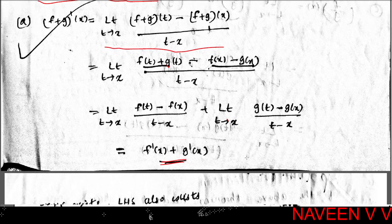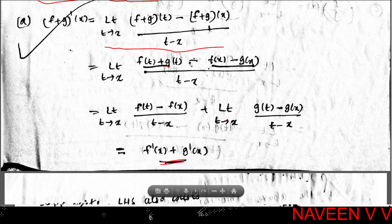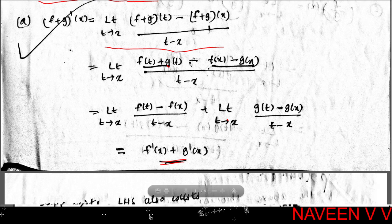Therefore, limit t→x of [(f+g)(t) - (f+g)(x)] / (t - x) = f'(x) + g'(x). So f+g is differentiable at point x and its derivative equals f'(x) + g'(x).